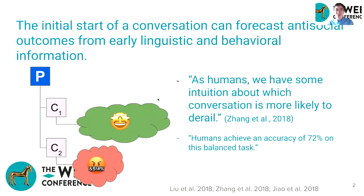Online conversations may go in many directions. Some of them turn out poorly due to antisocial behavior, while others turn out positively to the benefit of all. Research on improving online spaces has primarily focused on detecting and reducing antisocial behavior. Recent work shows that the initial start of a conversation can forecast antisocial outcomes from early linguistic and behavioral information, and humans achieve an accuracy of 72% in this task.